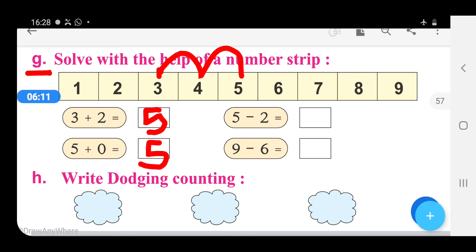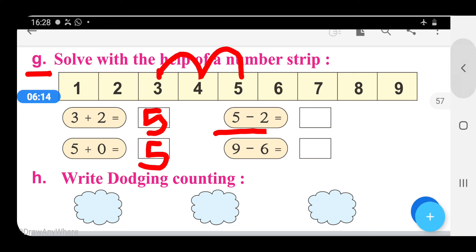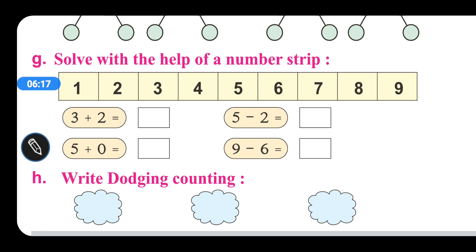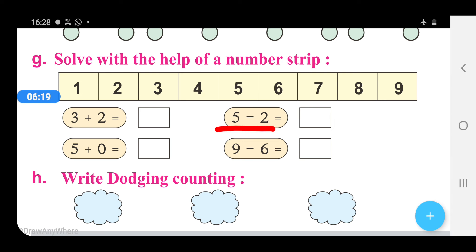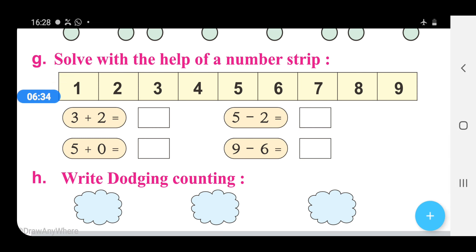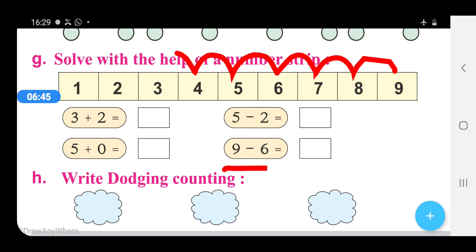5 plus 0 is also equal to 5 according to the properties of addition. Now the next one: 5 minus 2. Starting from the number 5, we will jump backward 2 steps — 1, 2 — and after jumping we are getting the number 3. So right here 3. And in the next one, 9 minus 6 — we will jump 6 steps backward: 1, 2, 3, 4, 5, and 6 — and after jumping we are getting the number 3. So right here 3.